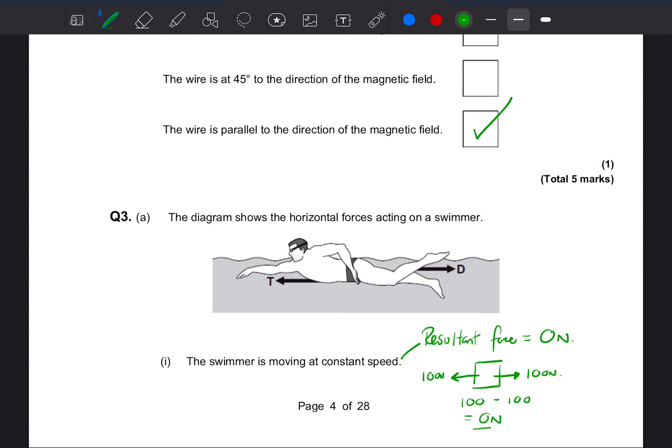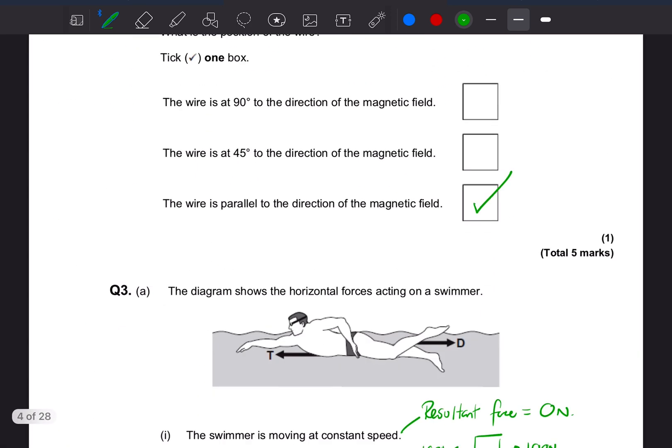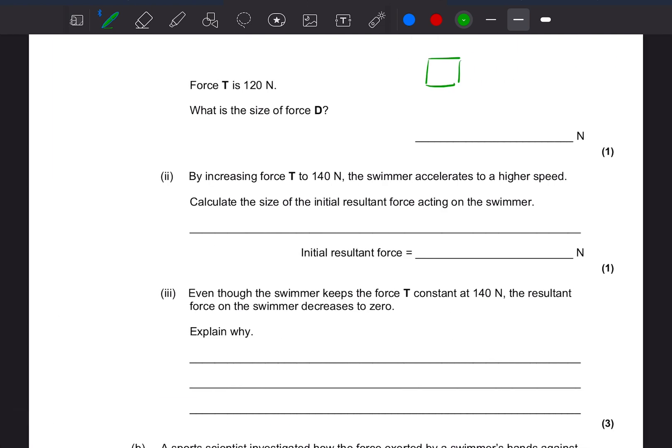If you get that, you'll have a constant speed. So force T is 120. What is the size of force D? So we can draw that out. So force T is a forward force, so there's force in this direction. So T is 120 newtons. It says that the speed is constant, so therefore force D must be, in order to have a resultant force of zero newtons, it must be 120 minus 120, which gives us zero. So force D is 120 newtons.